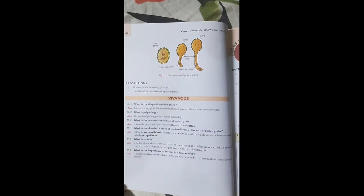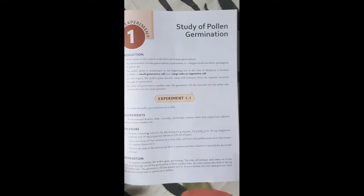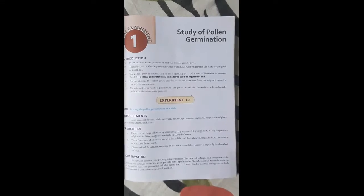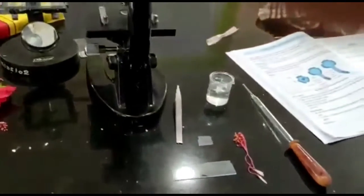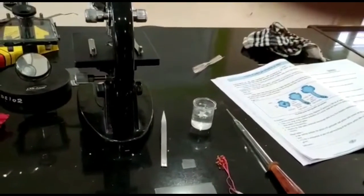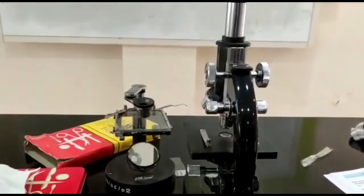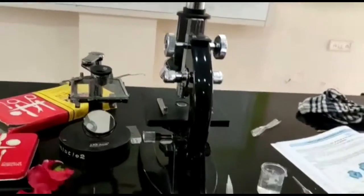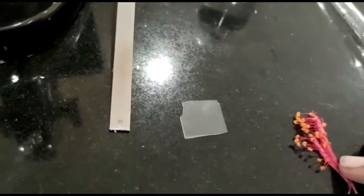After pollination, when pollen grains reach the stigma, these pollen grains absorb water and nutrients from the stigmatic secretion through its germ pores. The tube cell gives rise to a pollen tube. The generative cell also descends into the pollen tube and divides into two male gametes. This pollen tube conducts through the style of the gynoecium and reaches the ovule where the female gamete is present for fertilization.